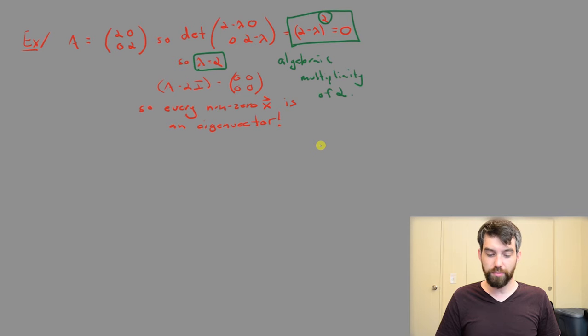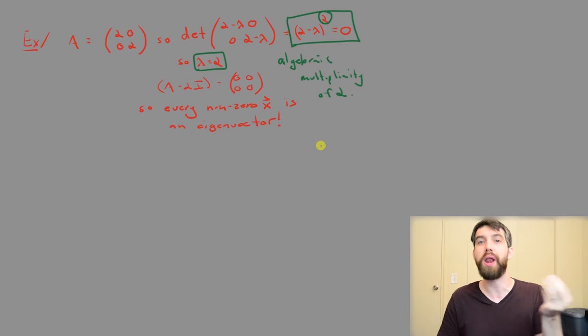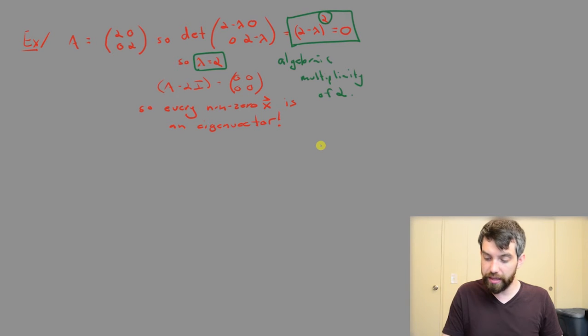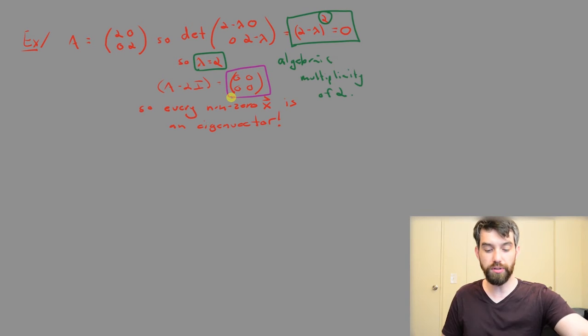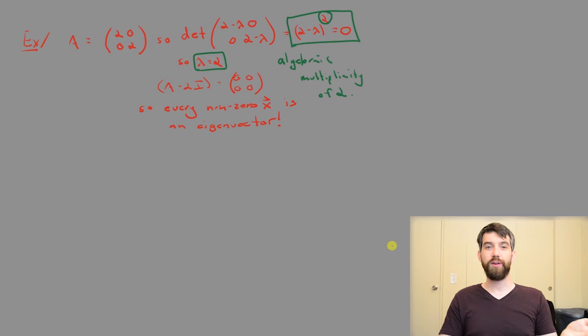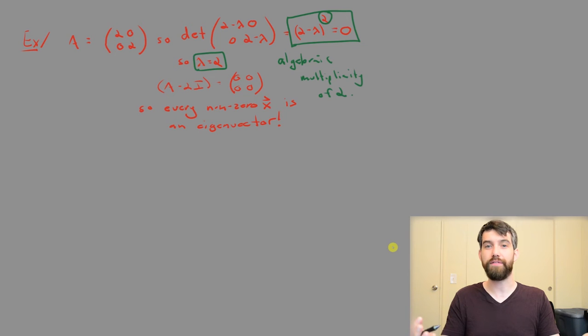But then, if I go and do my computation, the matrix that I get, the A minus lambda I, when I plug in lambda is equal to 2, my one eigenvalue, is just going to be this 0, 0, 0, 0 matrix. And the 0, 0, 0, 0 matrix, well, every vector x is going to satisfy Ax equal to 0 when you've got the 0 matrix. So every single vector x, except for the 0 vector because we don't call that an eigenvector, every non-zero vector x is going to be an eigenvector.